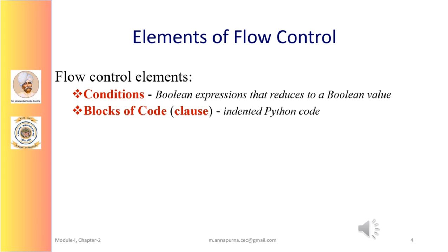Blocks of code are lines of Python code that can be grouped together into blocks. We can easily identify when a block begins and ends from the indentation of the lines of code. There are three rules for blocks: blocks begin when the indentation increases, blocks can contain other blocks, and blocks end when the indentation decreases to zero or to a containing block's indentation. If the Python code is properly indented, we can easily identify and understand the blocks.